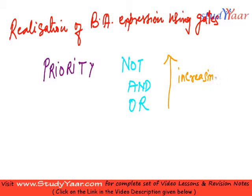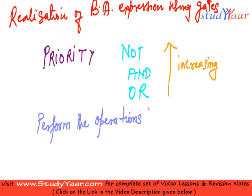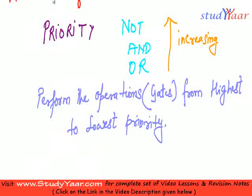NOT is the highest priority. So what you have to do is perform the operations. Operations are what? Gates. From highest to lowest priority. That is the only step that you have to follow. That is the step for realization.